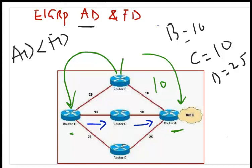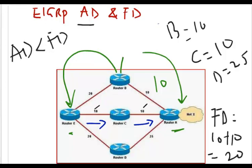For us to choose a feasible successor from this diagram, the administrative distance must be less than the feasible distance of the successor. From the diagram here we understand that the feasible distance of the successor is 10 plus 10 equals 20, which is this 10 and this 10. Now the administrative distance must be less than 20 for it to be considered a feasible successor.